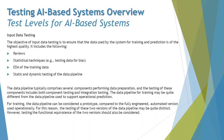The data pipeline for training may be quite different from the data pipeline used for operational predictions. The training data pipeline can be considered a prototype compared to the fully engineered automated version used operationally. For this reason, testing of these two versions may be quite distinct; however, testing the functional equivalence of the two versions should also be considered. Data sets are crucial and need to be tested separately and independently.